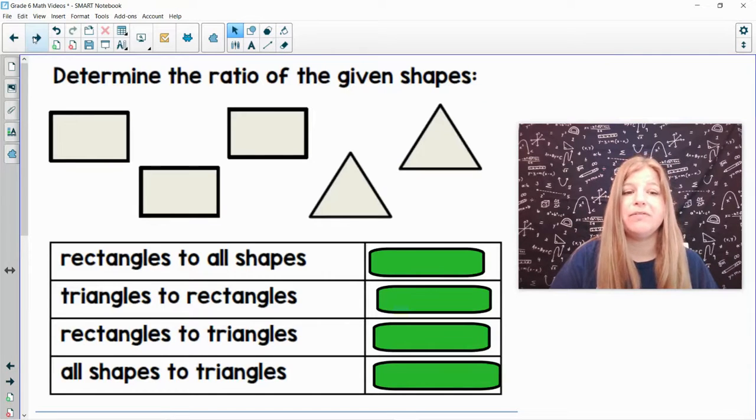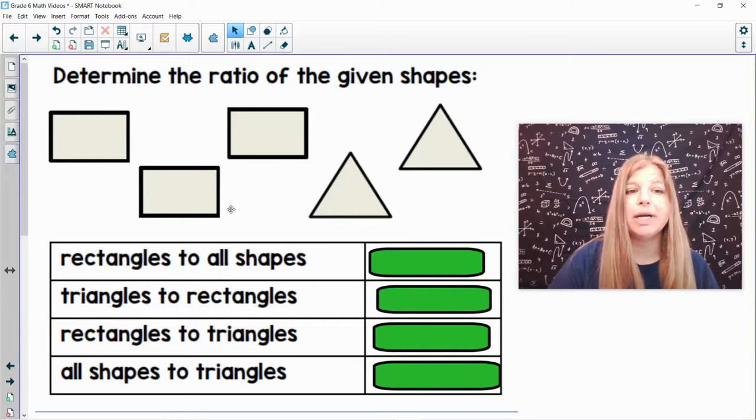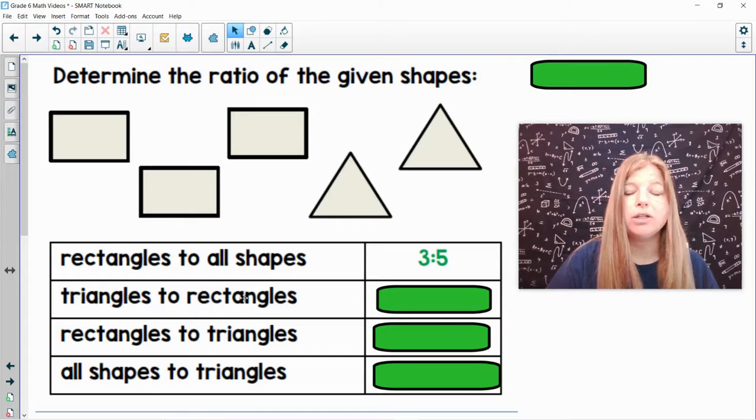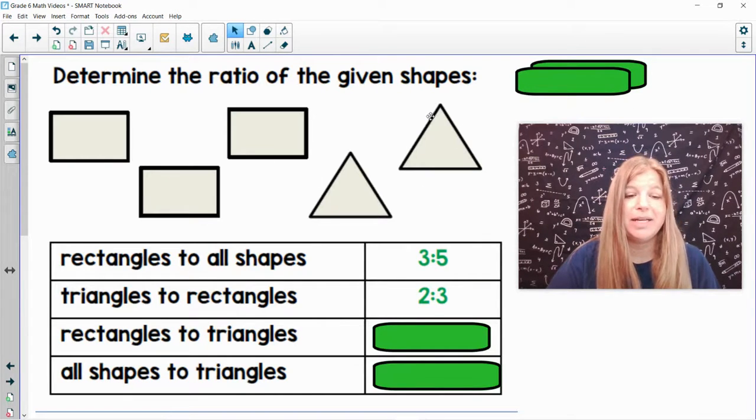Next one. Determine the ratio of the given shapes. Rectangles to all shapes. How many rectangles do I have here? I have three. How many would be all the shapes? Five. So it's three to five. Triangles to rectangles. How many triangles do we have here? There's two. Rectangles we know is three, so the ratio is two to three. These can't be simplified yet.